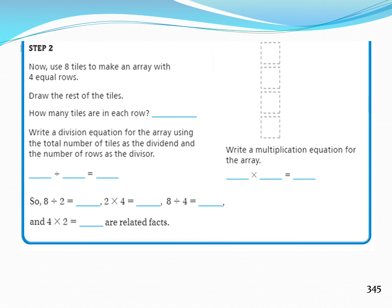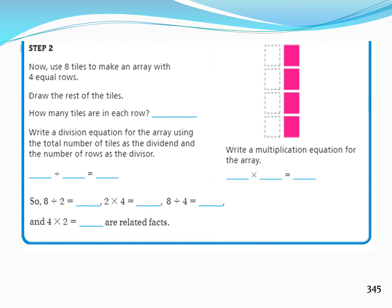We are still on page 345. Step 2: Use 8 tiles to make an array with 4 equal rows. Draw the rest of the tiles. Let's draw them together. We have 4, and we'll draw 4 more. How many tiles are in each row? 2 tiles.